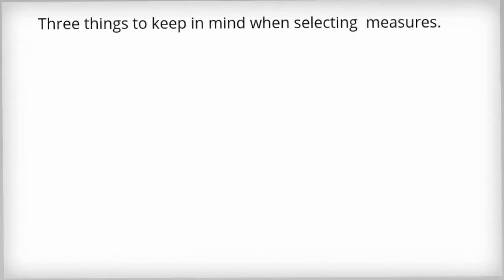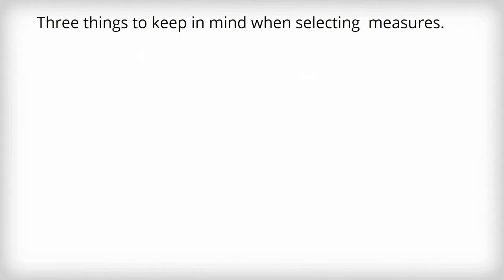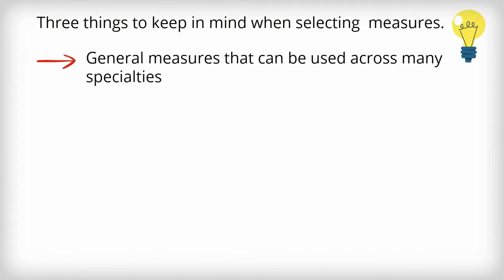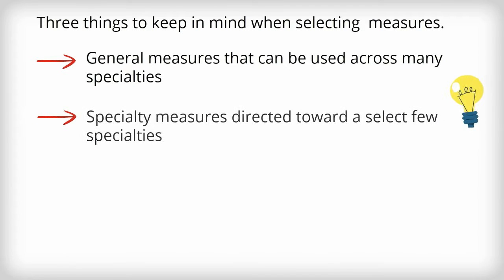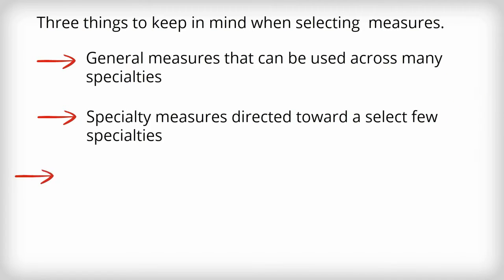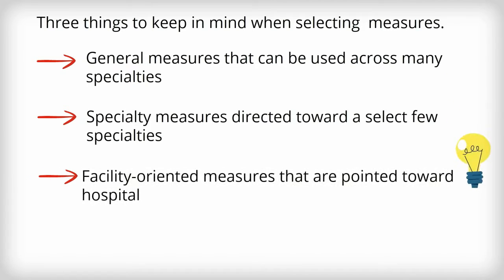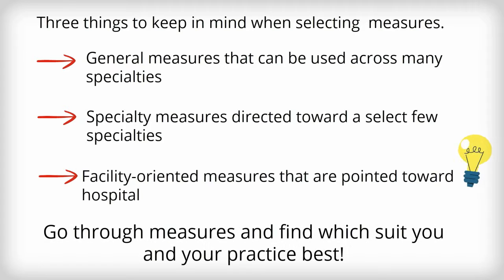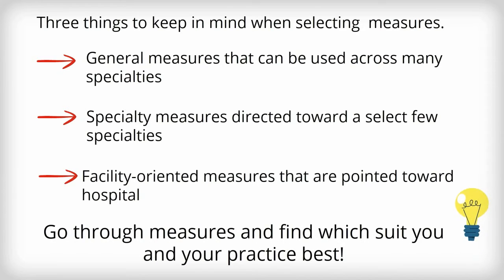There are 3 things to keep in mind when choosing measures: general measures that can be used across many specialties, like medication reconciliation; specialty measures directed toward a select few specialties, like ACE inhibitor prescriptions; and facility-oriented measures that are more pointed toward hospitals. You'll need to go through and see which measures work best for you.